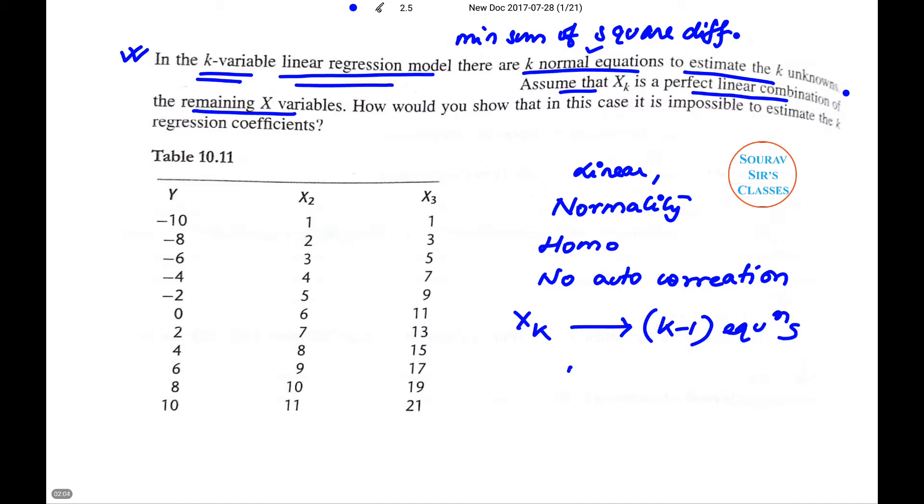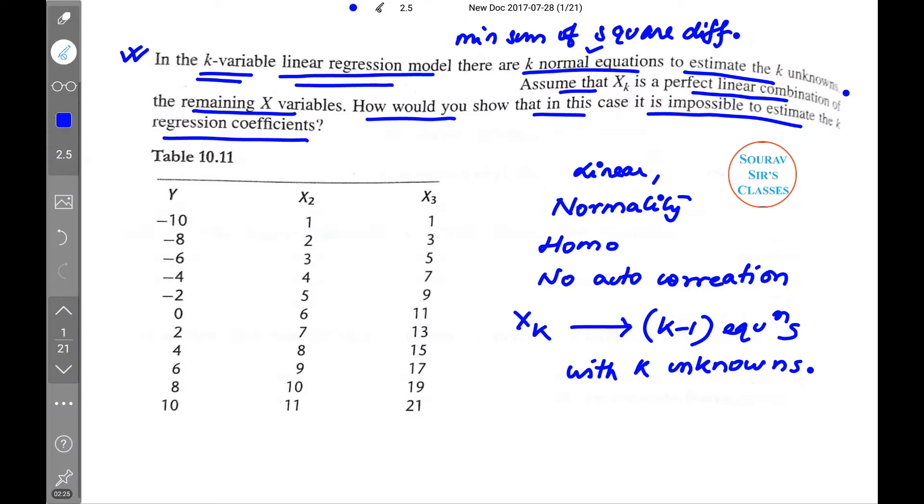k-1 equations with k unknowns. Now the question is: how would you show that in this case it is impossible to estimate the k regression coefficients? Now before answering the question...